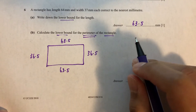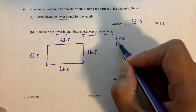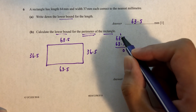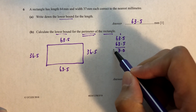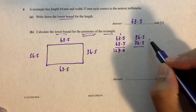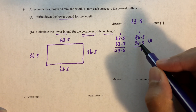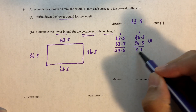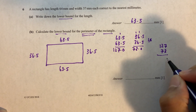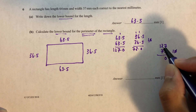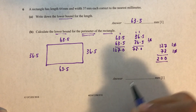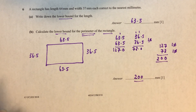Adding all sides: 63.5 plus 63.5 equals 127, and 36.5 plus 36.5 equals 73. Now 127 plus 73: 7 plus 3 is 10, carry 1; 2 plus 7 plus 1 is 10, carry 1; giving 200. So 200 mm is the lower bound for the perimeter of the rectangle.